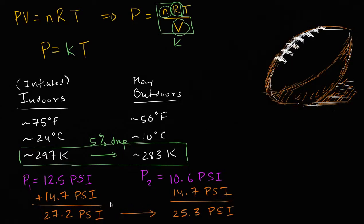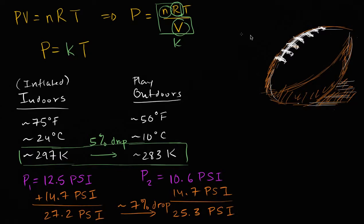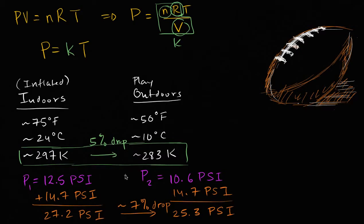Adding 14.7 PSI to 10.6 PSI gives 25.3 PSI absolute outdoors. We still have the same 1.9 PSI drop, but now it's over a larger base of 27.2 PSI. 1.9 divided by 27.2 is just under 7% — approximately a 7% drop. These two numbers — a 5% temperature-driven drop and a 7% pressure drop — are much closer. Other factors like measurement imprecision or evaporative cooling from precipitation could account for the small remaining difference. The numbers here pretty much account for most of the pressure drop, so I wouldn't get too caught up in the conspiracy theories.